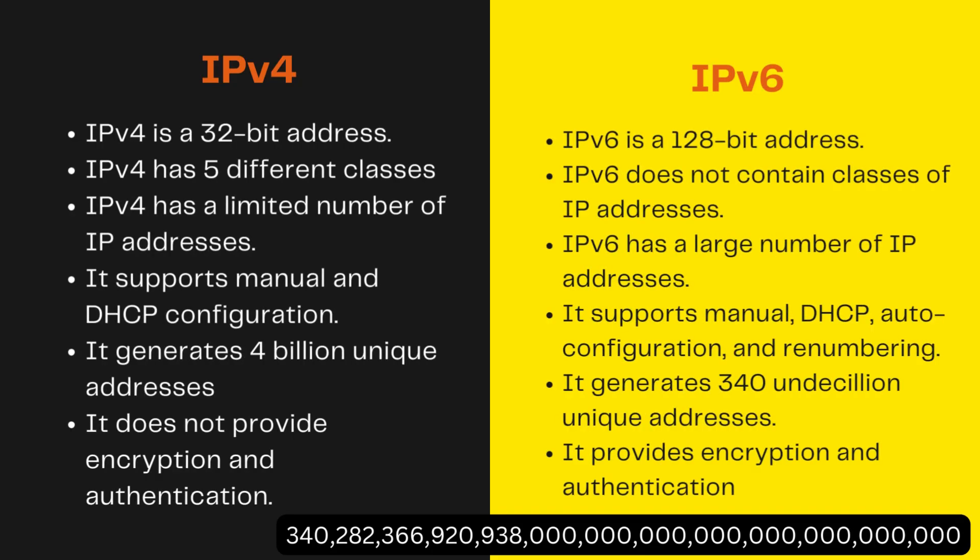In IPv4 it is a 32-bit address, while IPv6 is a 128-bit address. Therefore, while IPv4 generates only 4 billion unique addresses, IPv6 generates 340 undecillion unique addresses. If you are curious how much 340 undecillion is, the number is shown at the bottom of this slide in white on a black background.